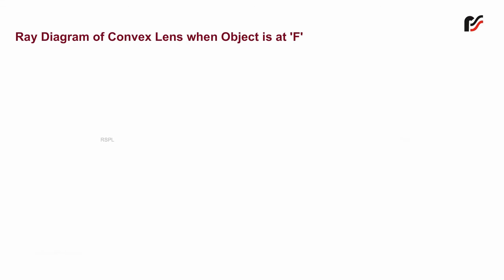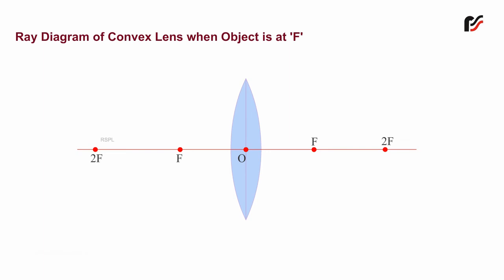Ray diagram of a convex lens when the object is placed at F. The diagram shows the principal axis, optical center O, focus F, and center of curvature 2F. When an object AB is placed at F,